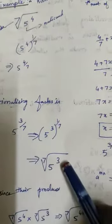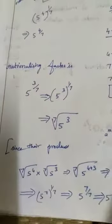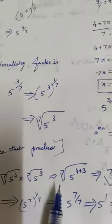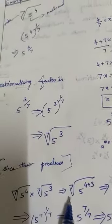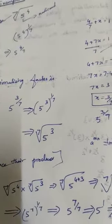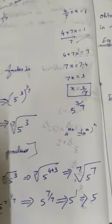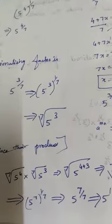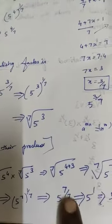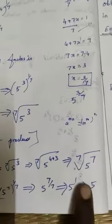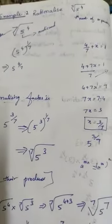Rationalization factor is 5 power 3 by 7 equals 5 power 3, power 1 by 7, nth root, 7th root. 5 power 3 is the rationalization factor. Since the product - orders are equal, so inside the radicand we multiply. When bases are equal, powers we add. 5 power 7. Next, index formula - using index formula, a power mn formula gives 5 power 1, which is 5. Thank you students.